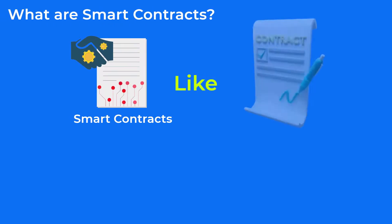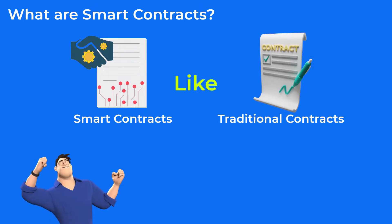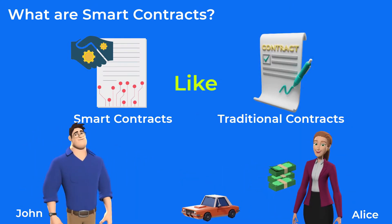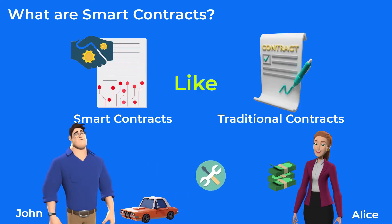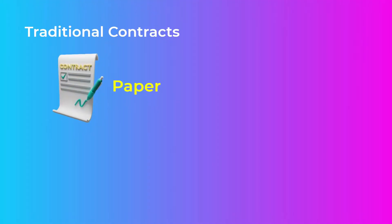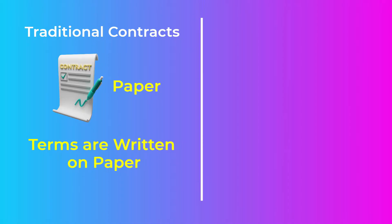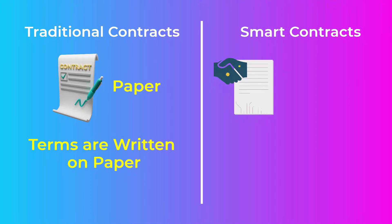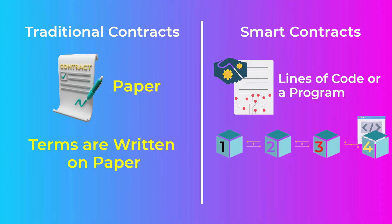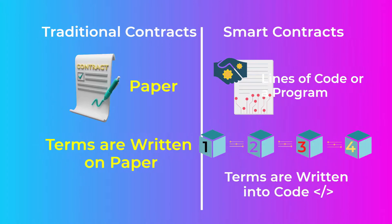Smart contracts are basically just like traditional contracts — an agreement between two or more parties to exchange money, properties, services, or anything that has value. Traditional contracts are papers where contract terms are written and signed. Smart contracts, on the other hand, are lines of code or a program stored on a blockchain, where terms of the agreement are written into this code.